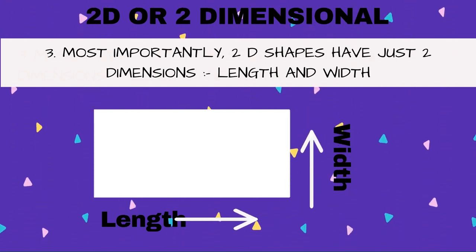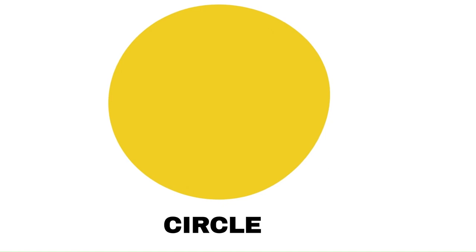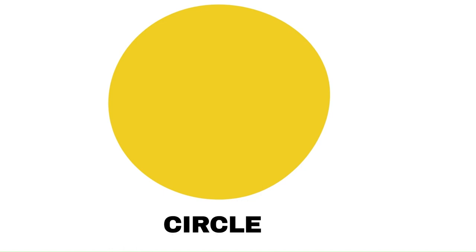Now let's have a look at some common 2D shapes. A circle is a 2D shape which has no sides and no corners. It is made up of a curved line.